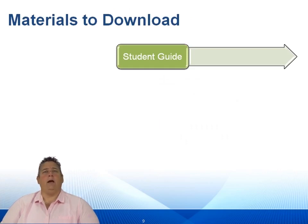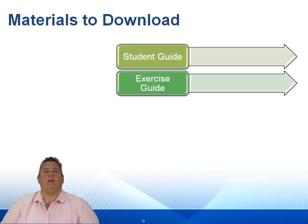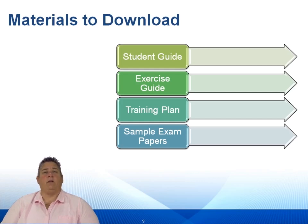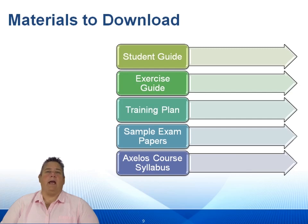There are materials to download to help you work within this course and to help your efforts as you study and prepare for the exam. There is a student guide that you can download — it has a copy of all of the slides that you'll see in the videos. There's also an exercise guide that has the exercises that will be assigned as well as suggested answers. There's a training plan document. And then most importantly, the two official sample papers from Axelos for the OSA course. Realize that the sample papers come in three parts: a scenario document, a question document, and the final document is the answers and justifications. There is also a copy of the Axelos course syllabus.